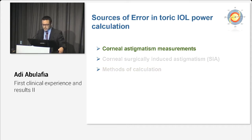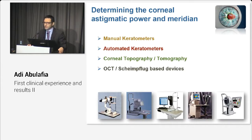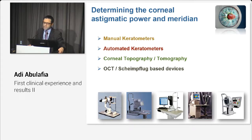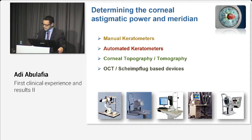Let's start with corneal astigmatism measurements. There are many devices in the market that use different technologies to measure corneal astigmatism. Most of them are based on anterior corneal measurements, but some can measure the posterior cornea as well. Not all of them measure in the same location, and some will have better repeatability and accuracy than others. It is important to be familiar with your devices and to know their strengths and weaknesses.